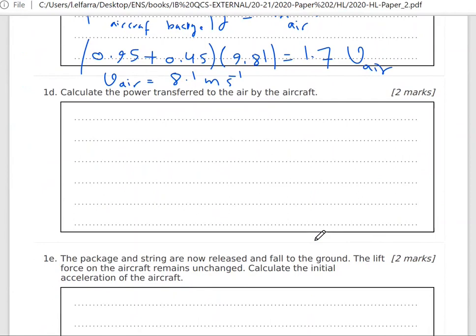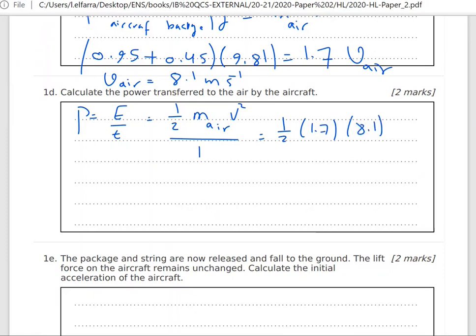Calculate the power transferred to the air by the aircraft. The definition of power is energy over time. The type of energy here is kinetic energy. Kinetic energy of air: half mass of the air times velocity squared divided by time. Half times 1.7 times 8.1 squared divided by 1, this gives us 56 watts.